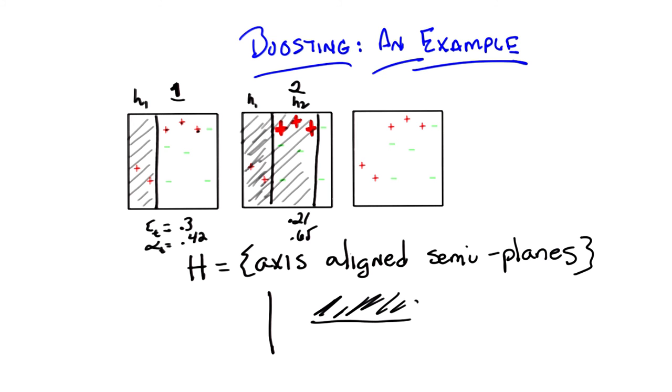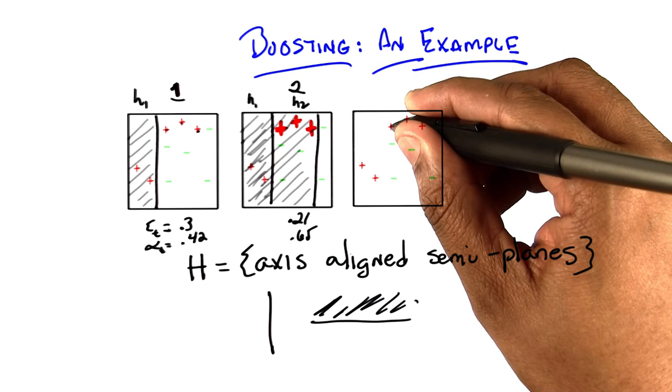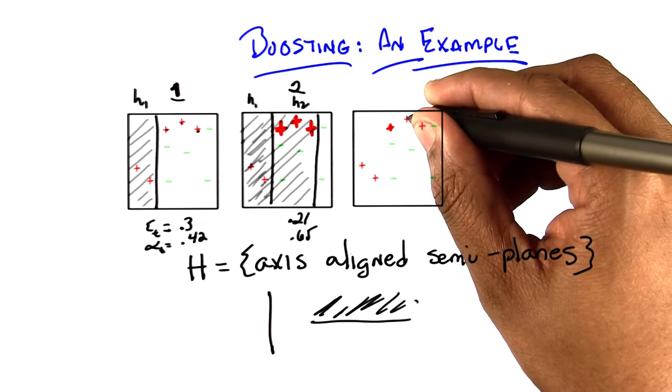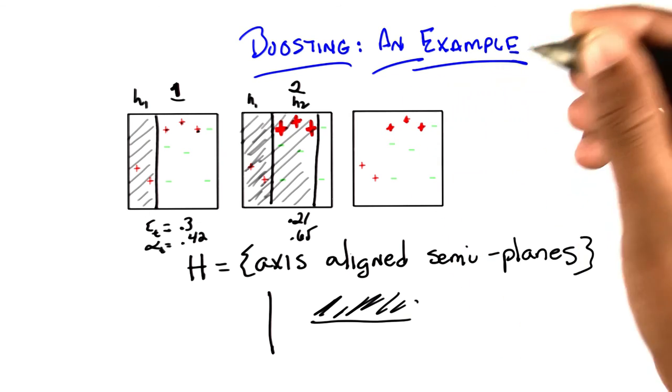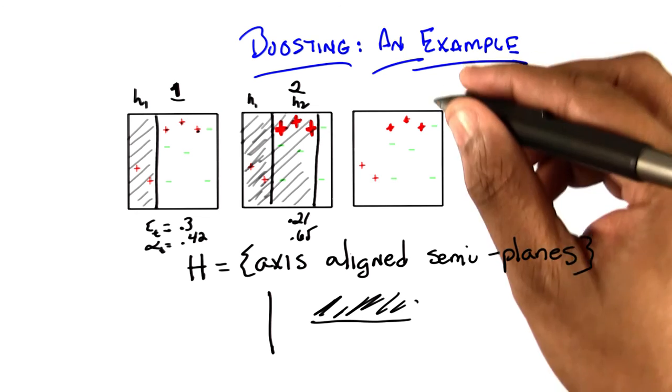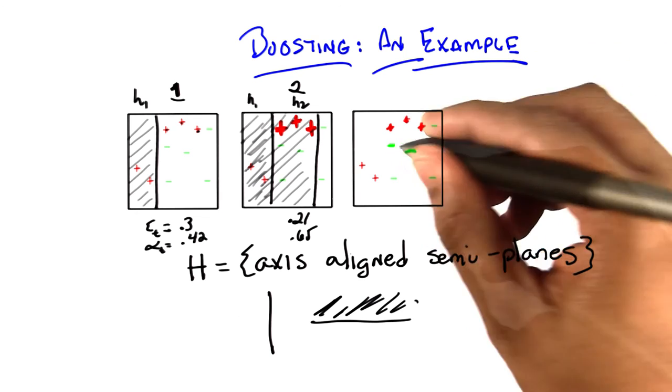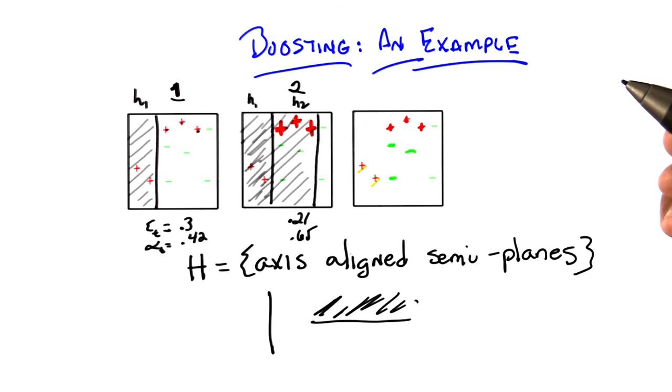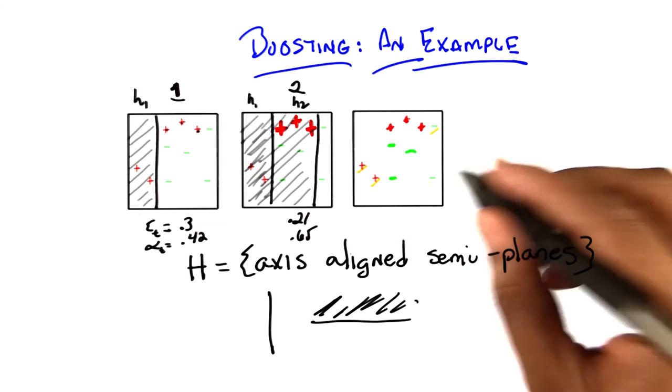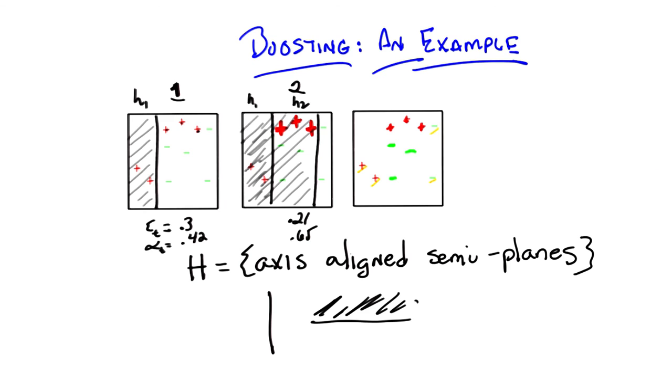So if we do, if I do my best to, if I do my best to kind of draw that, you're still, you're going to have, these pluses are going to be a little bit bigger than the other pluses, but they're going to be smaller than they were before. The two, the three greens in the middle are going to be bigger than they were before, but those two pluses are going to be even smaller, and these two minuses are going to be smaller. So, what do you think the third hypothesis should be? Quiz. Oh, I like that.